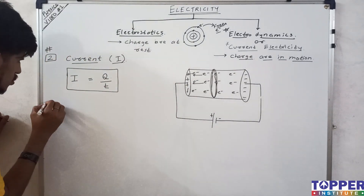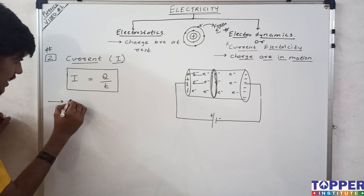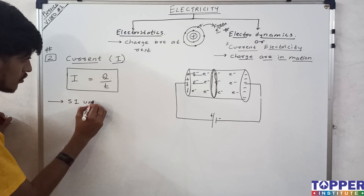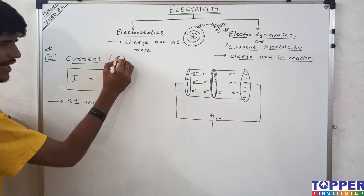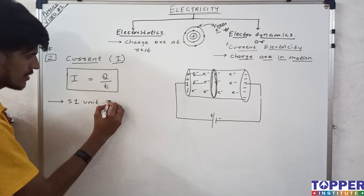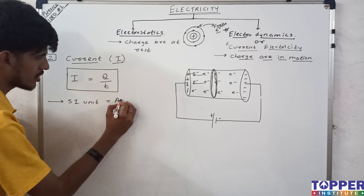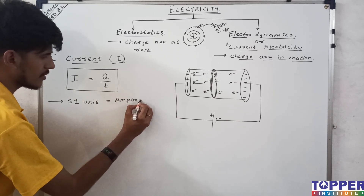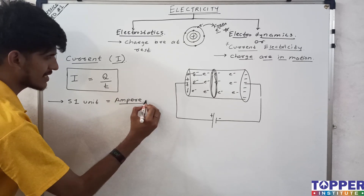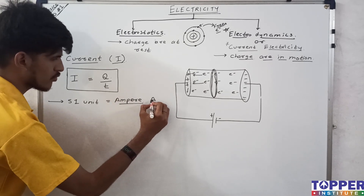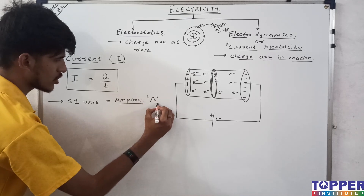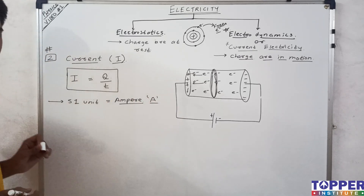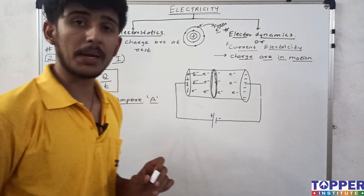Current is represented by I. Its SI unit is the Ampere, named after the scientist Ampere, written as 'A' in short. So the SI unit of current is Ampere (A).